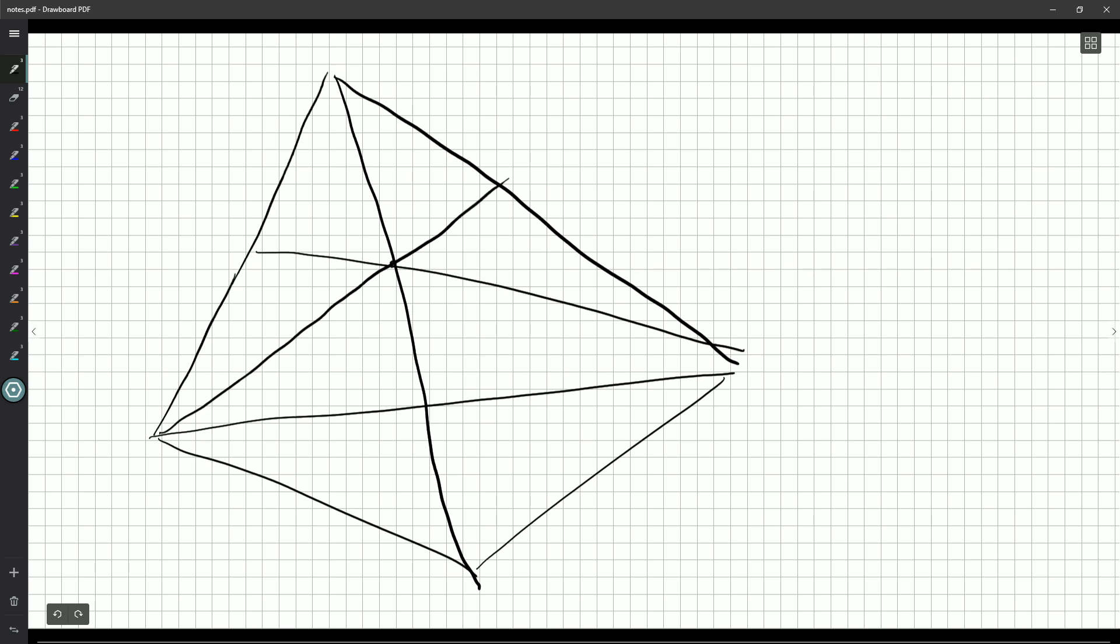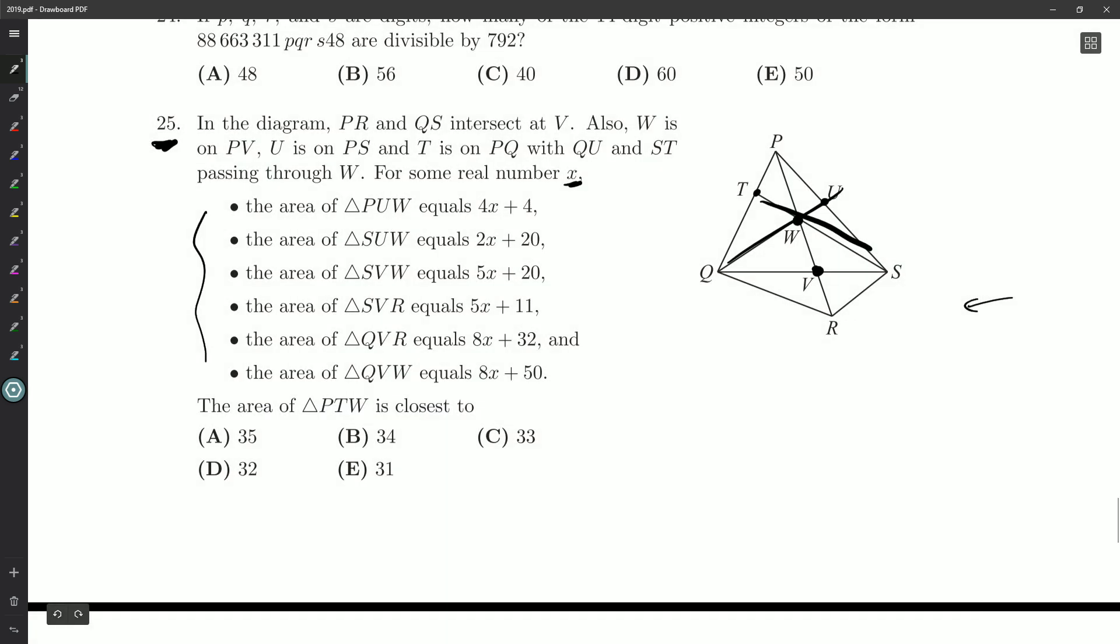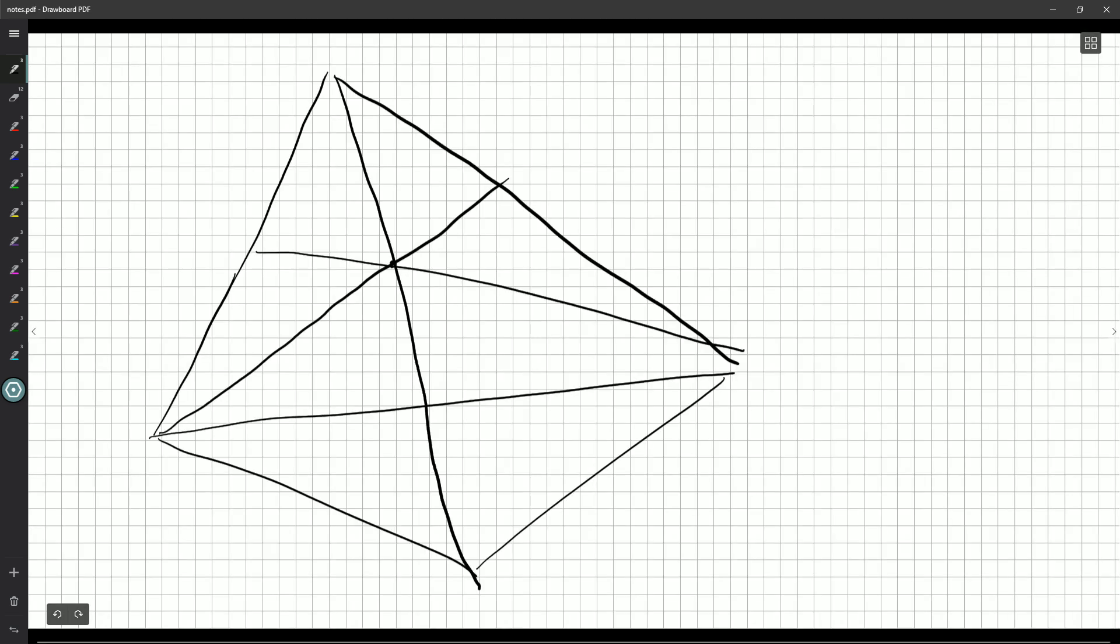All right, there we go. It's close enough. So for some real number X, PUW is 4X plus 4, SUW is 2X plus 20. Let's label those.